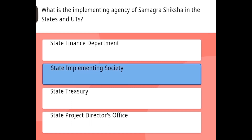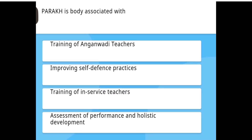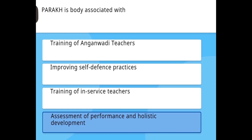What is the implementing agency of Samagra Shiksha in the states and Union Territories? The answer is State Implementing Society. PARAKH is a body associated with assessment of performance and holistic development.